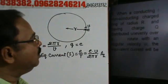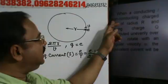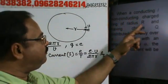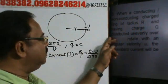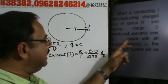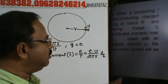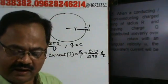Next topic - when a conducting, non-conducting charge ring of radius R, having charge Q, distributed on it over it, rotate with an angular velocity omega, the equivalent current will be...